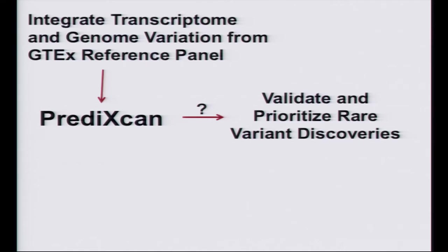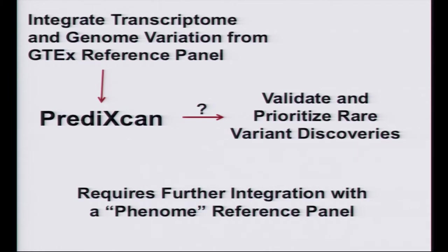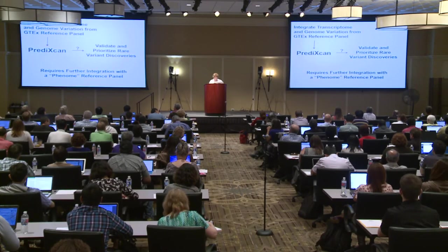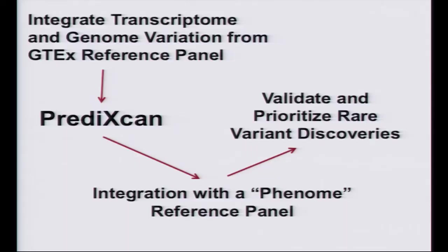We've been thinking about how we can use PrediXcan in this context to potentially validate and prioritize rare variant discoveries. PrediXcan itself involves an integration of transcriptome and genome variation, using GTEx as a reference panel. To really validate and prioritize rare variant discoveries, you have to do further integration with what I'd call a phenome reference panel. And having moved to Vanderbilt, have I got a phenome reference panel for you.